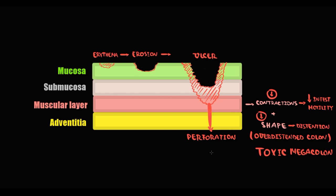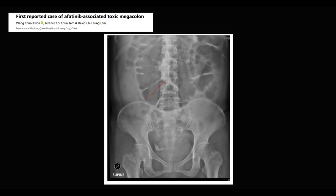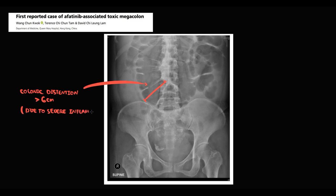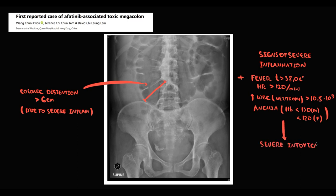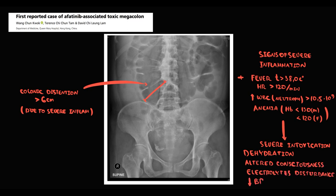The diagnostic method of choice for toxic megacolon is X-ray. The major diagnostic feature is overdistension of the large intestine greater than 6 cm. The major criteria for toxic megacolon are signs of severe inflammation: fever, tachycardia, neutrophilic leukocytosis, and anemia due to blood loss. Systemic inflammation causes systemic intoxication manifesting as dehydration, altered consciousness, electrolyte disturbances, and hypotension due to blood loss and dehydration. X-ray criteria and signs of inflammation are the major criteria; signs of systemic intoxication are additional or minor criteria.